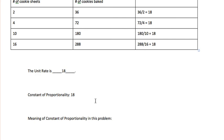The constant of proportionality is the same as the unit rate: 18. That is the number we multiply by our x value to get our y value every time — 2 times 18 equals 36, 4 times 18 equals 72, 10 times 18 equals 180, and 16 times 18 equals 288. The meaning of the constant of proportionality in this problem is that we can fit 18 cookies per cookie sheet.